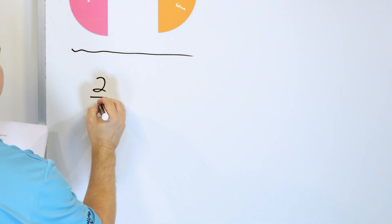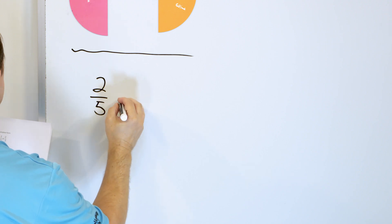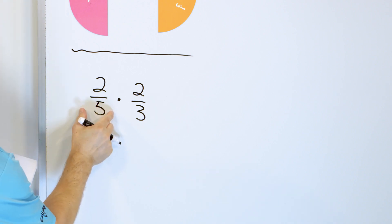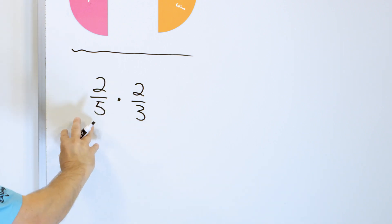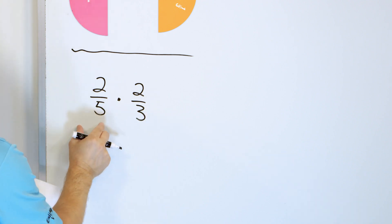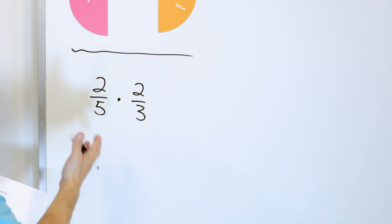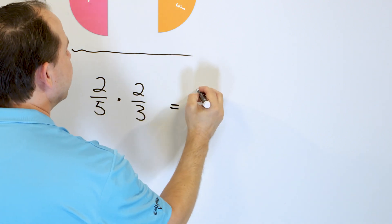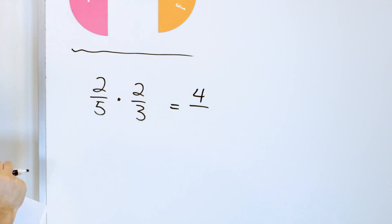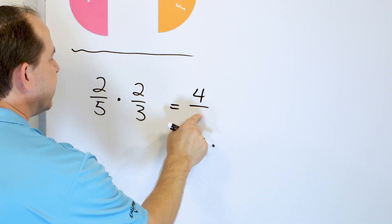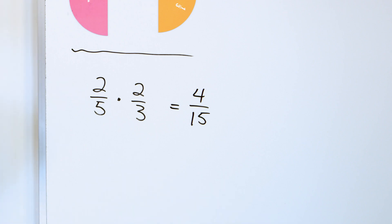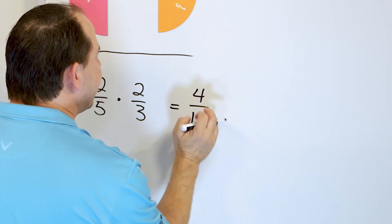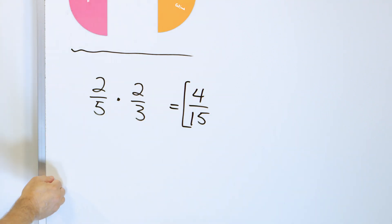For the remaining problems, we'll just calculate and simplify without the visual magnets. Let's take two fifths multiplied by two thirds. Multiply the tops: two times two is four. Multiply the bottoms: five times three is fifteen. We don't need a common denominator — just multiply tops and bottoms. We cannot simplify four fifteenths any further, so the final answer is four fifteenths.